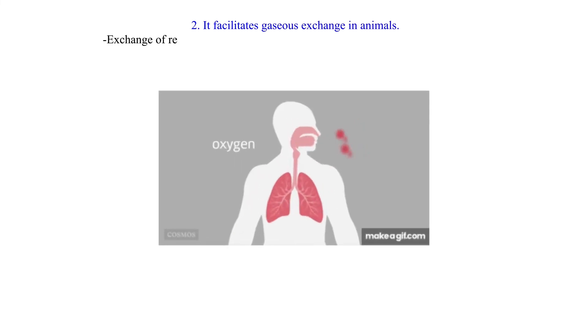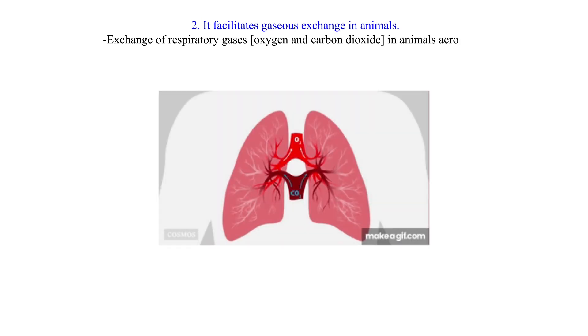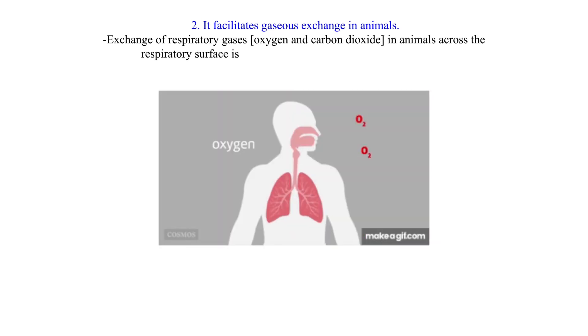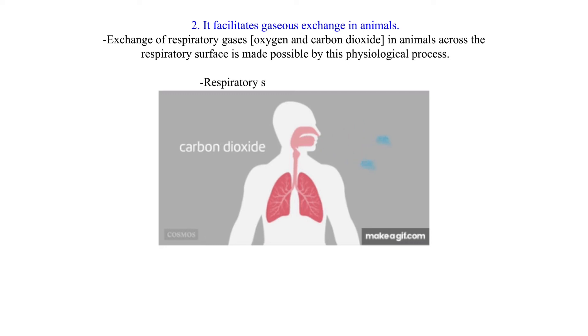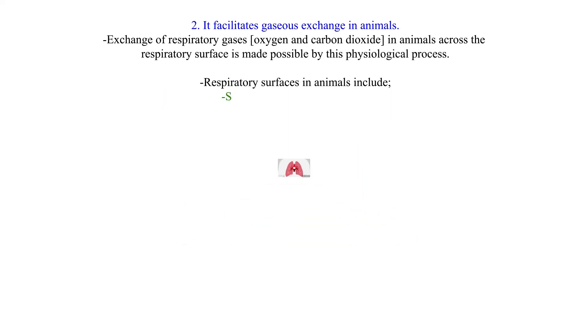2. It facilitates gaseous exchange in animals. Exchange of respiratory gases, oxygen and carbon dioxide, in animals across the respiratory surface is made possible by this physiological process. Respiratory surfaces in animals include: